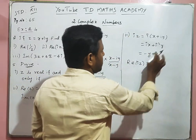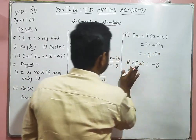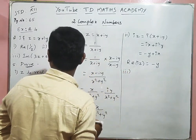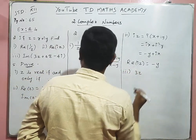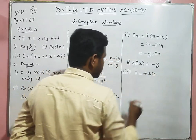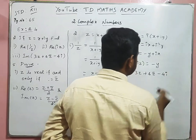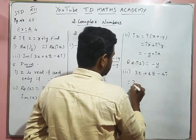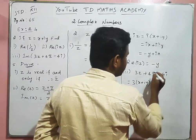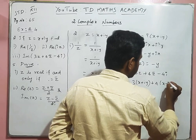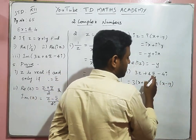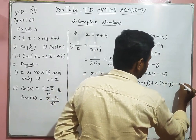That is the real part of the complex number iz. Next, the third question: find 3z + 4z̄ - 4i. We have 3(x + iy) + 4(x - iy) - 4i, where z̄ = x - iy is the conjugate.